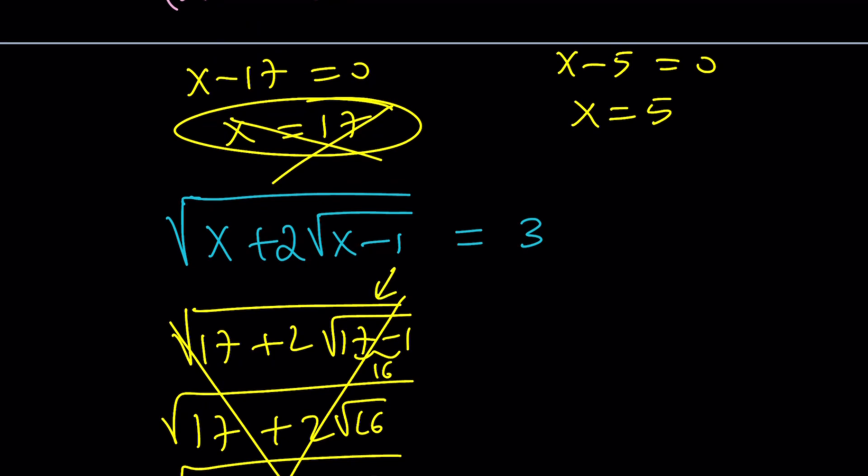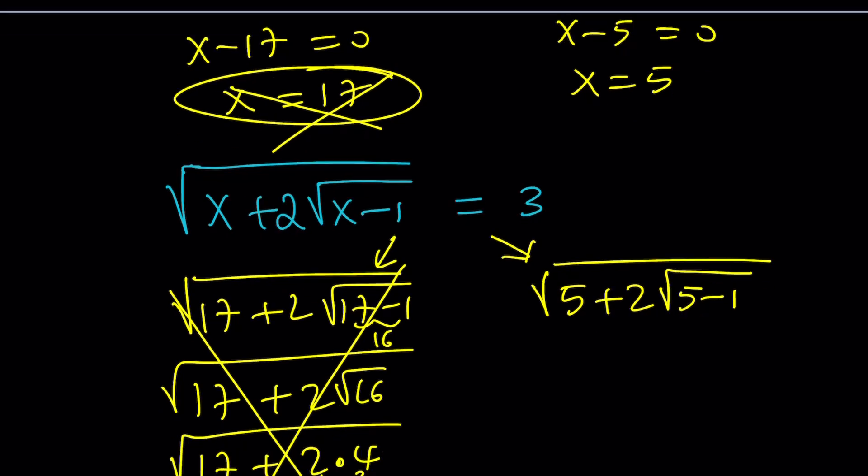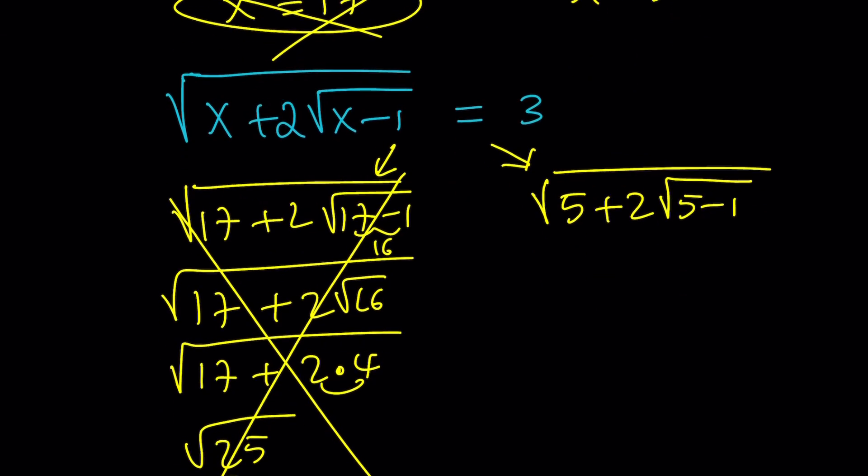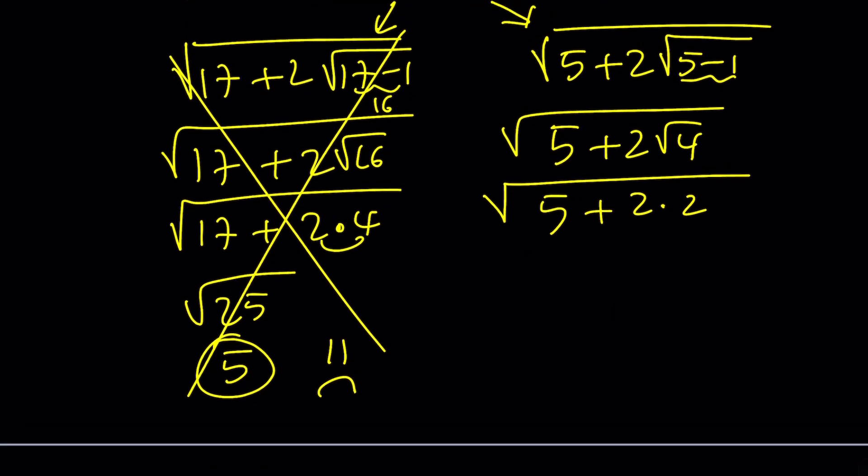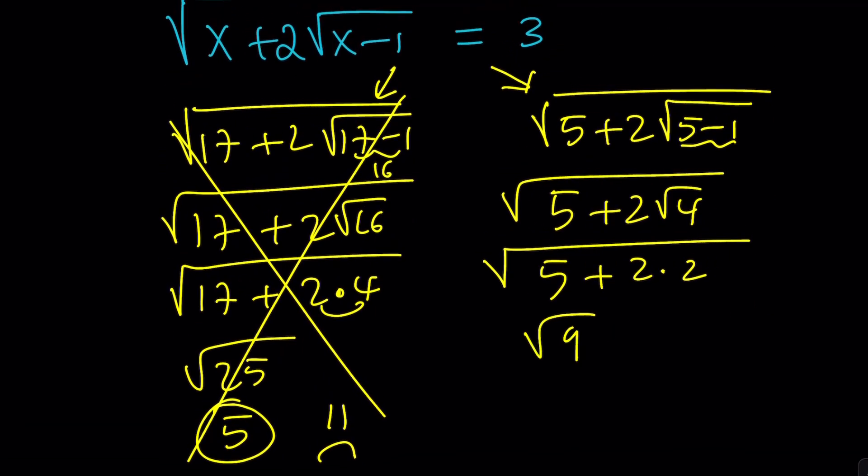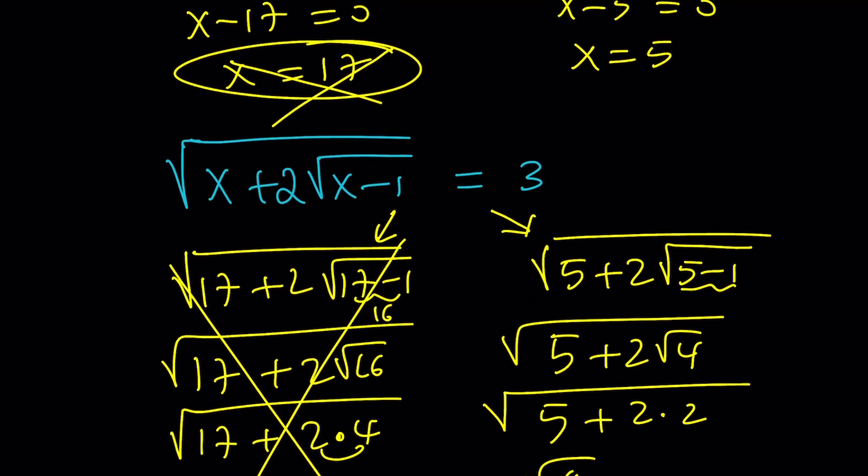And this was for 17, but let's go ahead and check the 5. Hopefully that'll work. Square root of 5 plus 2 times the square root of 5 minus 1. And this is supposed to equal 3, but let's simplify this. This is 4. So 5 plus 2 times the square root of 4. Square root of 4 is 2, so it's 5 plus 2 times 2. The square root of 5 plus 4 is 9. That is square root of 9, and that's equal to 3. Yes, finally. We got one of the answers. So yes, x equals 5 works, and that's the only solution that works.